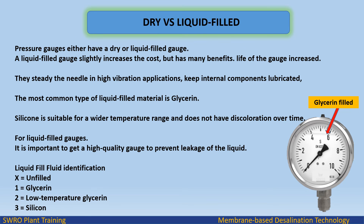Dry versus liquid filled: Pressure gauges are either dry or liquid filled. A liquid filled gauge slightly increases cost but has many benefits: increased gauge life, steadies the needle in high vibration applications, and keeps internal components lubricated. The most common liquid fill material is glycerin. Silicone is suitable for a wider temperature range and does not discolor over time.